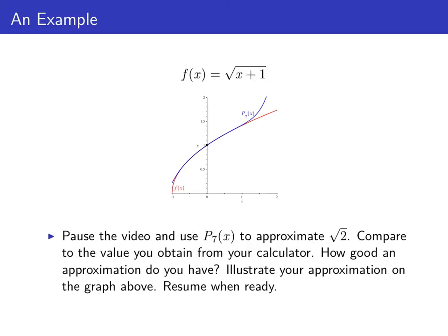These Taylor polynomials are useful for approximating values of functions that are somewhat complicated. For example, if we wanted to approximate the square root of two, we could use our Taylor polynomial p₇(x) to do that. Pause the video for a moment and use the seventh order Taylor polynomial for f at x = 0 to approximate the square root of two. Compare this to the result from your calculator to see how good your approximation is, and illustrate what you've done on this graph. Resume the video when you're ready.